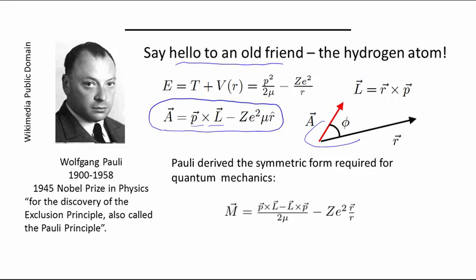The classical definition is asymmetric in P and L, and precocious young scientist Wolfgang Pauli devised a symmetrized form. He takes the mass out and puts it in a different area. This M vector that Pauli derived is identical up to an overall constant to the Runge-Lenz vector that we derived, but it has a nice symmetric form that is required by quantum mechanics.